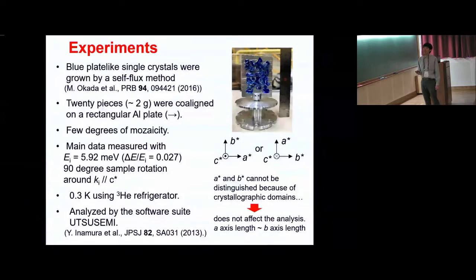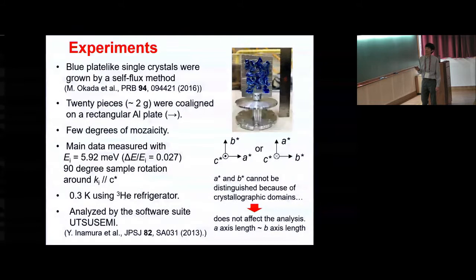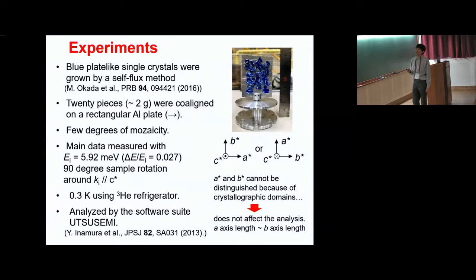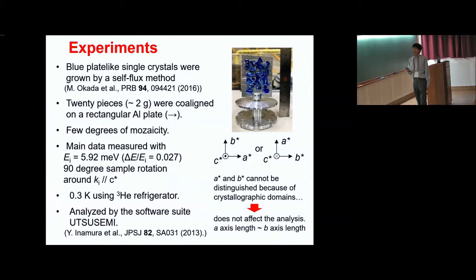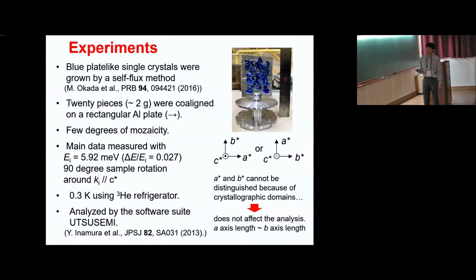Single crystalline samples were grown by a flux method using a cold tube as a SiO2 source. Blue plate-like single crystals with a size of 5 mm to 1 cm per edge were obtained and co-aligned on an aluminum plate. The aluminum plate was set vertically so that the A-star and C-star, or B-star and C-star, coincide with the scattering plane. Note that the A-star and B-star axes cannot be distinguished because of crystallographic domains included in each crystal.